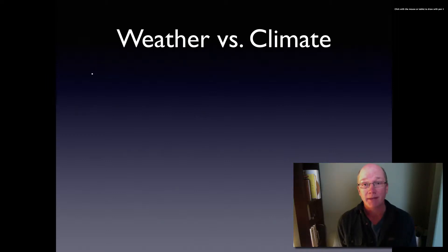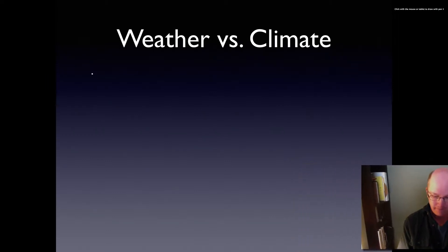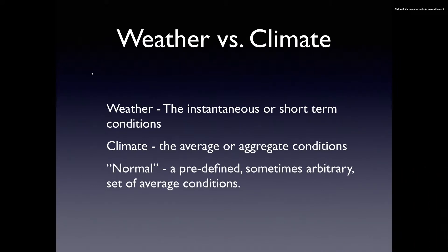Let's take a minute to talk about the difference between weather and climate. Weather is the instantaneous or short-term conditions that we happen to see outside, and climate is the average or aggregate conditions. Both of these things are usually defined relative to a normal or predefined, usually arbitrary set of average conditions.